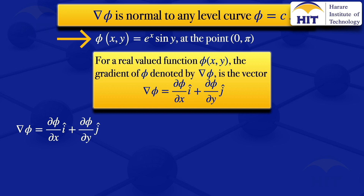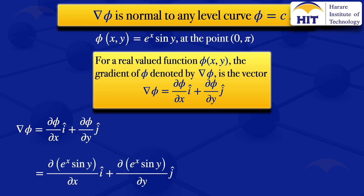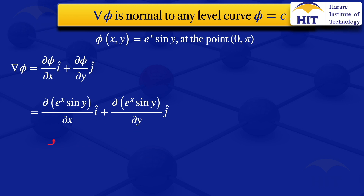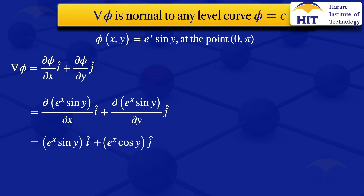Substituting our φ, which is e^x · sin(y), we have the partial derivative of e^x · sin(y) with respect to x times i, plus the partial derivative of e^x · sin(y) with respect to y times j. Differentiating with respect to x — treating y as a constant — gives e^x · sin(y) i. Differentiating with respect to y — treating x as a constant — gives e^x · cos(y) j. So that is our grad φ.